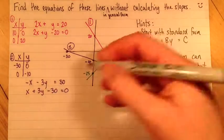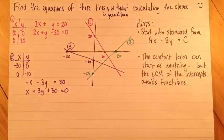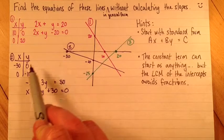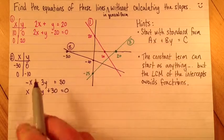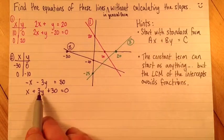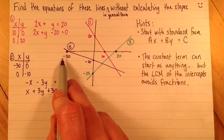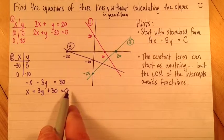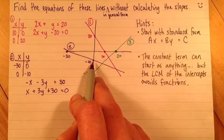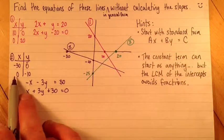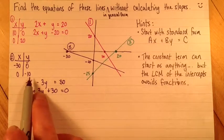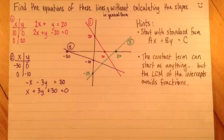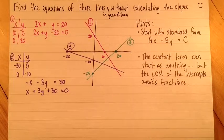It comes out to x plus 3y minus 30 equals 0. Wait, after saying how easy that was, I got the wrong sign there. Plus 30. Then just to check, if x was negative 30, I'd have negative 30 plus 0 plus 30, and that is 0. And if I check with this point, my x value would be 0. I'd have 0 plus 3 times negative 10 is negative 30 plus 30 equals 0. So that's the correct equation for the purple line.